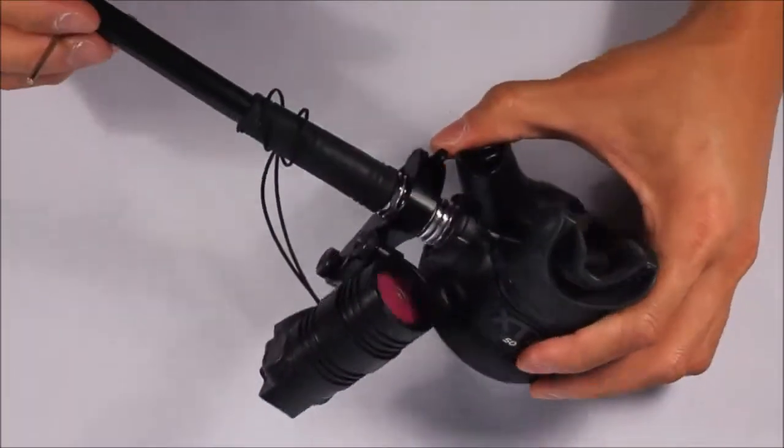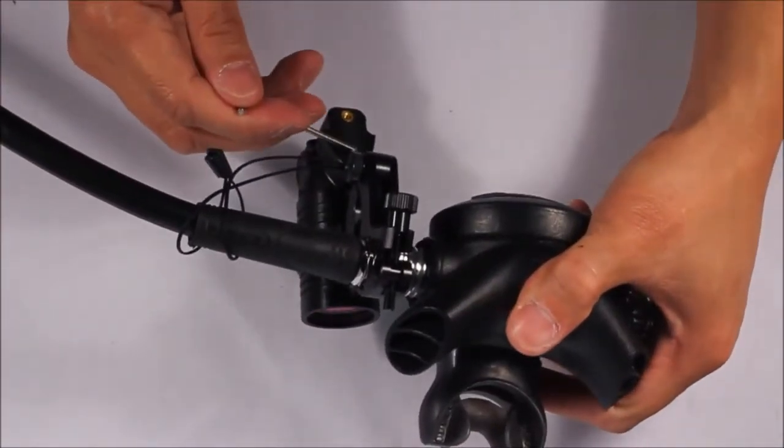In addition to the standard mounts, the NERD2 comes equipped with two 3mm mounting holes, providing a solid platform for custom mounting solutions to suit your style of diving.